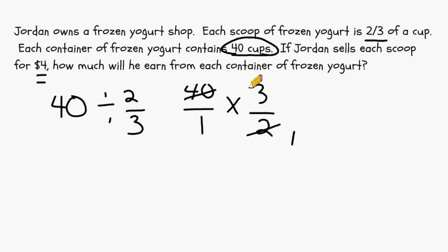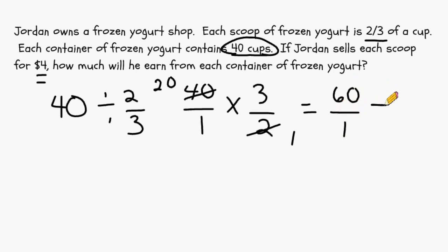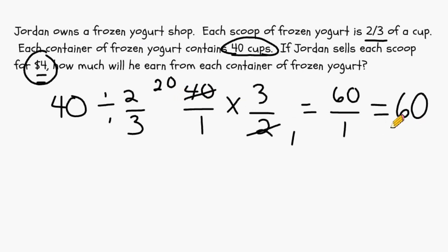Two goes into 2 once and 2 goes into 40 twenty times. So on the top that leaves us with 20 times 3, which is 60, and on the bottom we have 1 times 1, which is 1. And 60 divided by 1 is 60. This tells us how many scoops we can get out of a 40-cup container if each scoop is 2 thirds of a cup. And because each scoop is $4, we simply multiply the 60 scoops by $4. And 60 times $4 is equal to $240.